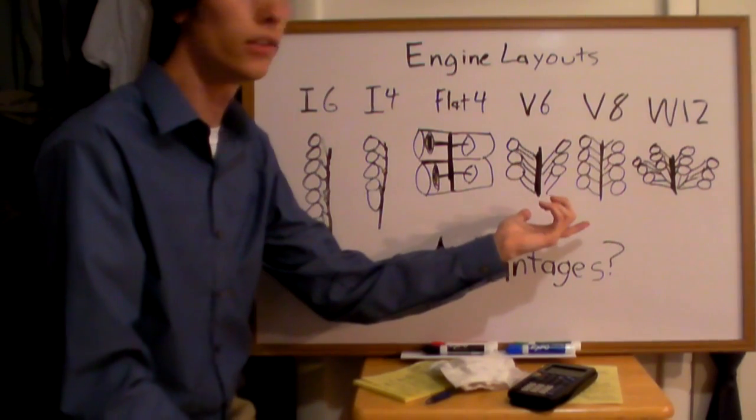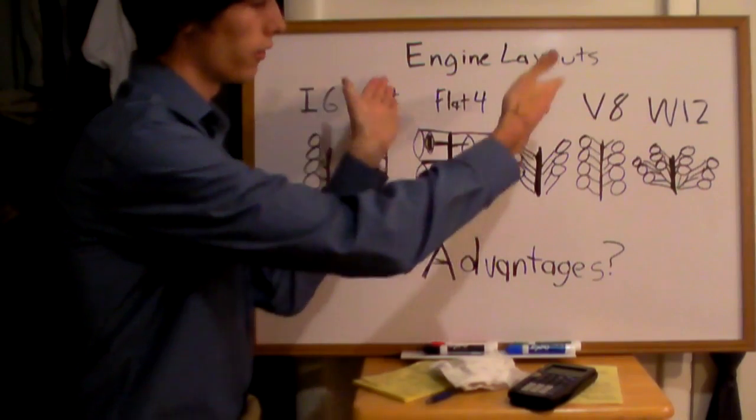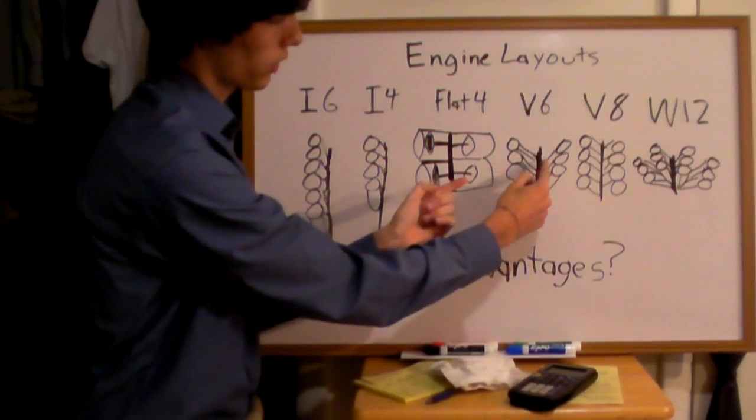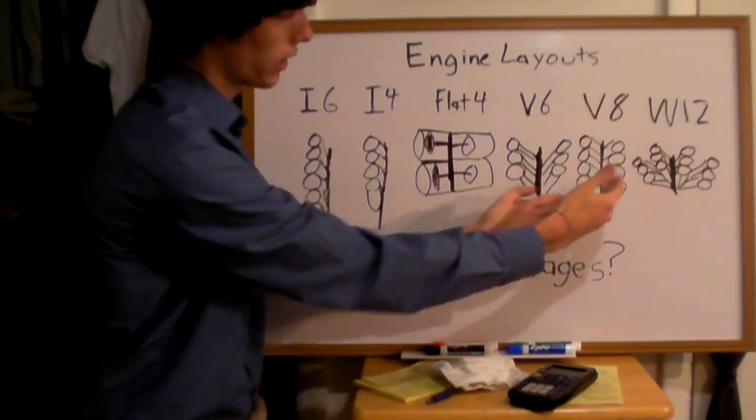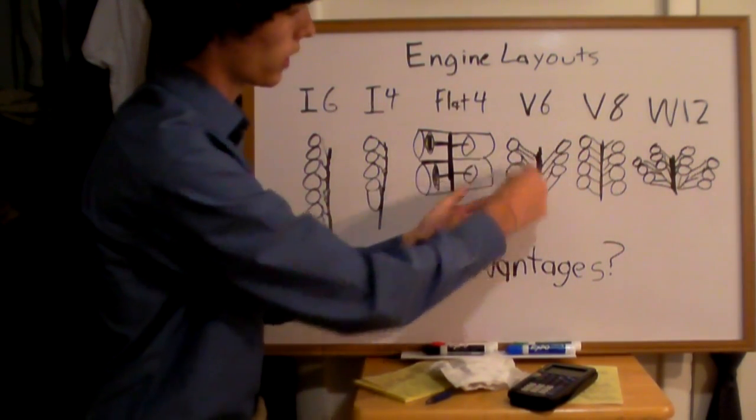Now on a V6 or a V8 or even a V4, your cylinders are arranged in a V shape as you can see here, connected to the same crankshaft. All six or all eight cylinders will be connected with pistons to the same crankshaft.